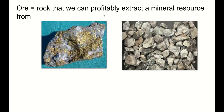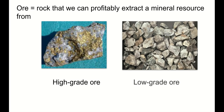Ore is a rock that we can profitably extract a mineral resource from — it's what we take out of the ground. Here are two gold-rich ores with an obvious difference: in one you can actually see the gold; in the other you can't. The first is a high-grade ore, meaning the mineral resource is in a high concentration. The second is a low-grade ore, where the mineral resource is in a much lower concentration. Processing low-grade ore requires far more material to extract a profitable amount of gold.